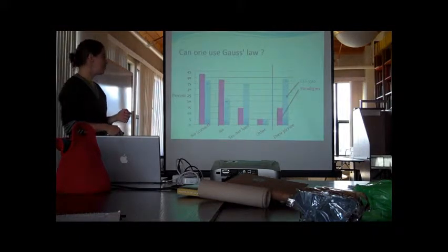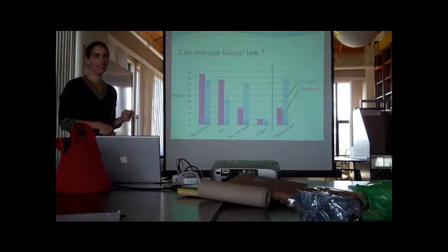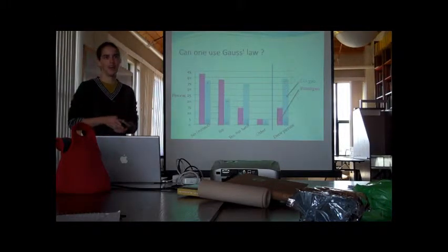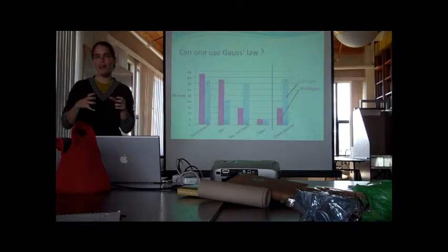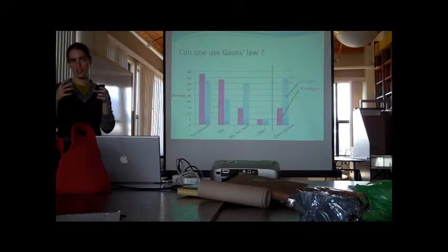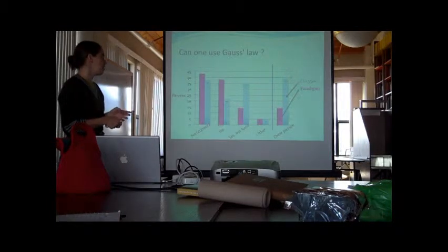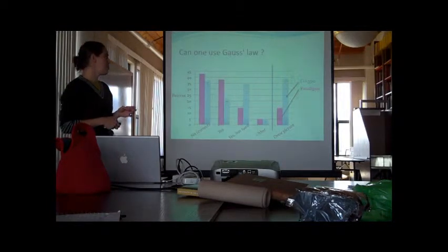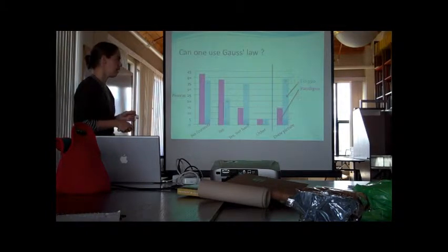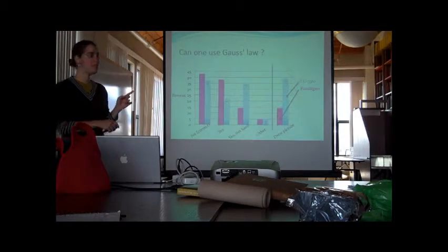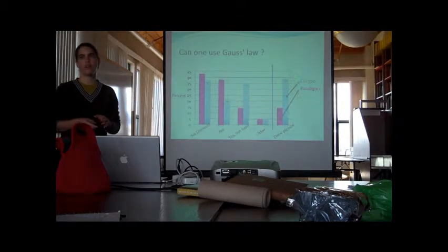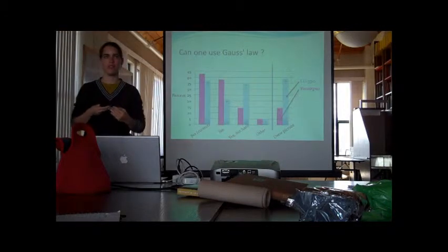And so I also, just for fun, I calculated how many people drew a picture, because the Gaussian surface was described in the problem statement, a cube was described, the Gaussian surface was described. 39% of the CU students drew those two, actually slightly less, one person drew some crazy Gaussian surface, but most people drew it, and many fewer in the paradigm course, but it was slightly different page formatting.